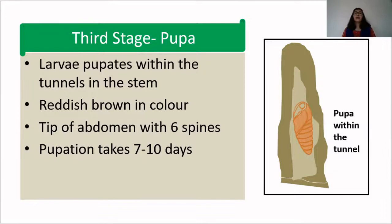Here in this diagrammatic representation you can see the tunnel in which the larva was present. The larva pupates within the tunnel in the stem. The pupa is reddish brown in color. The tip of the abdomen bears 6 spines. Pupation takes 7 to 10 days, and it occurs in the same tunnel where the larva was feeding.